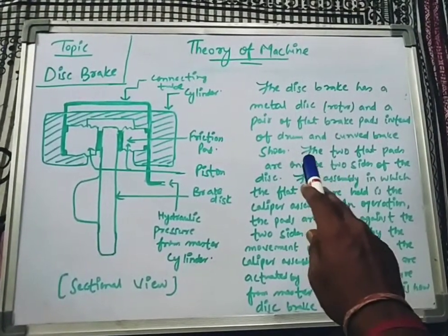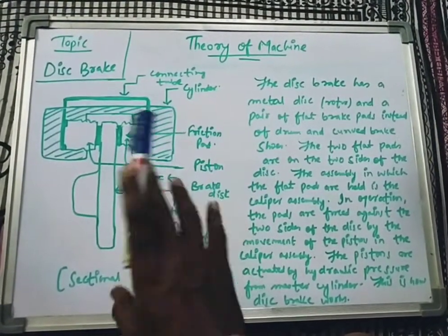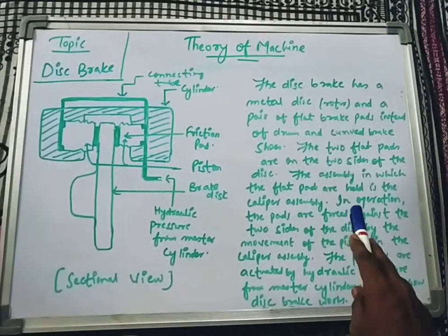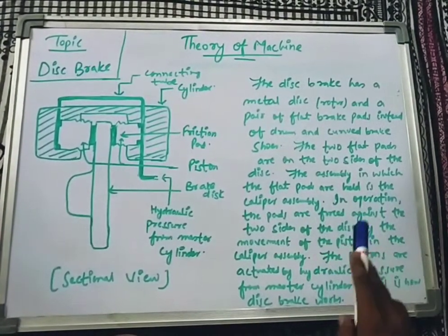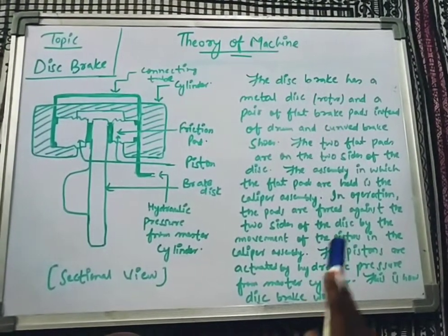The two flat pads are on both sides of the disc. The assembly in which the flat pads are held is called the caliper assembly.